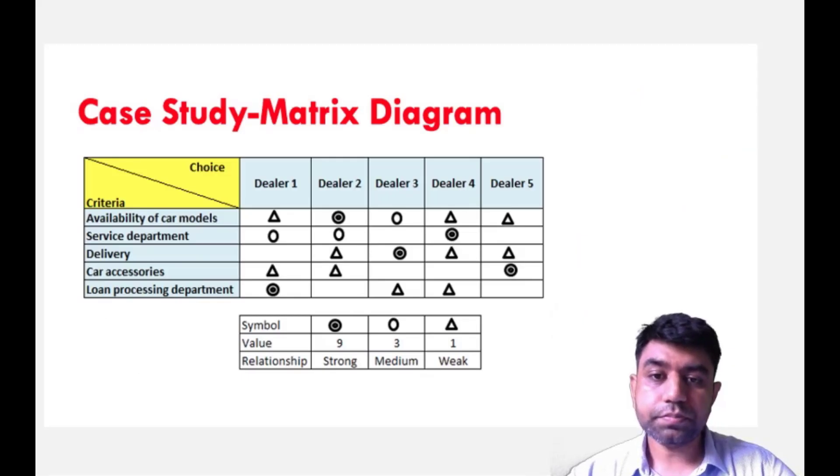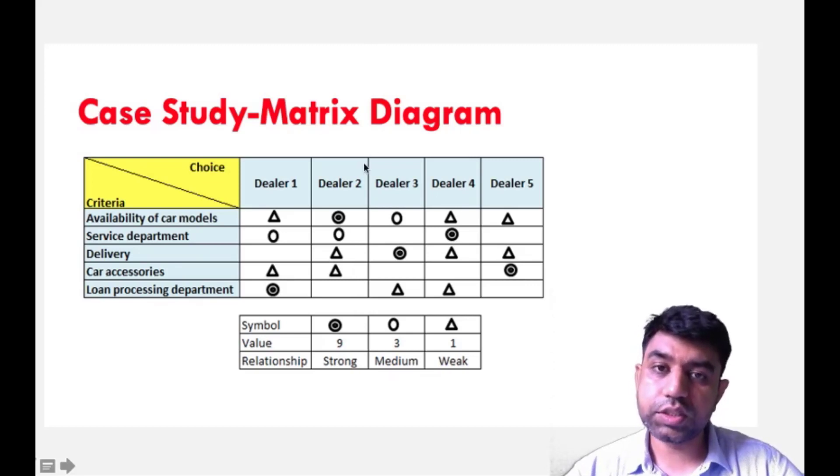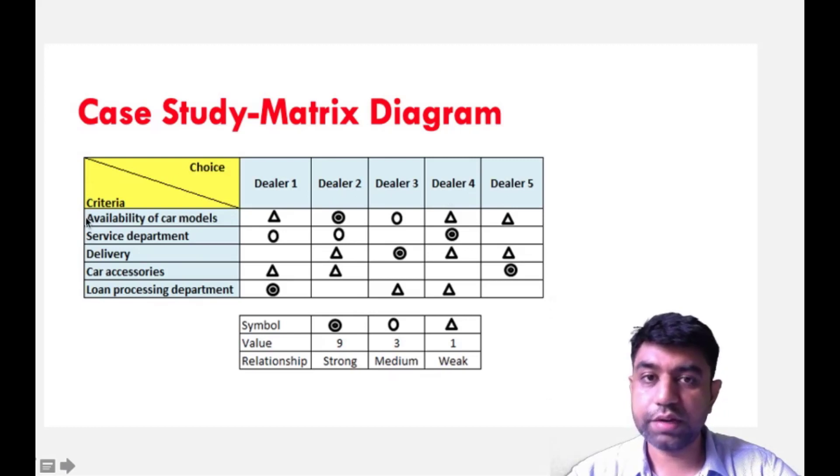Now, let us have one example so that you get a better idea. Let us take the example of Maruti Suzuki, who is having a number of dealers. Let us say they are having a dealer in Gandhinagar, in Ahmedabad itself at 3-5 locations. We are giving just a number to them: Dealer 1, 2, 3, 4, 5. So customer is having this many choices. And what are the criteria the customer wants whenever they need to select a car? They need to have availability of car models, service department must be there, proper delivery, maybe expected car accessories from the dealer, and the loan processing department. So, what we are going to do is in this case, we are just symbolizing each and every criteria. Just a symbol, any symbol you can develop.